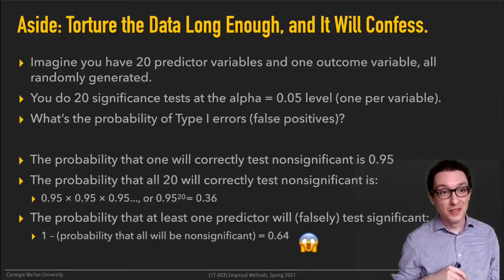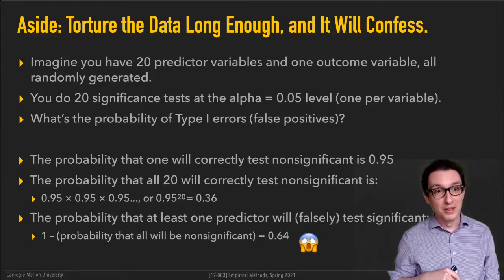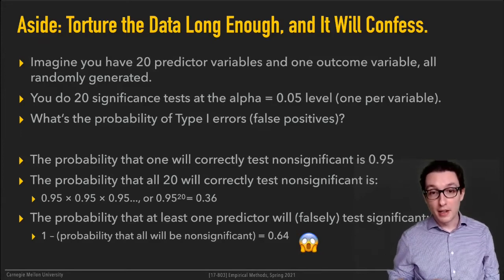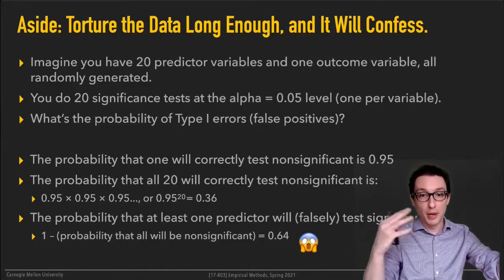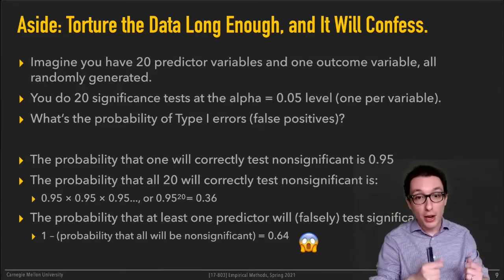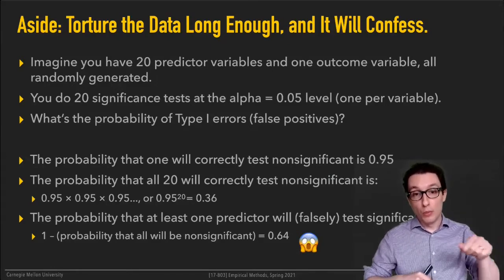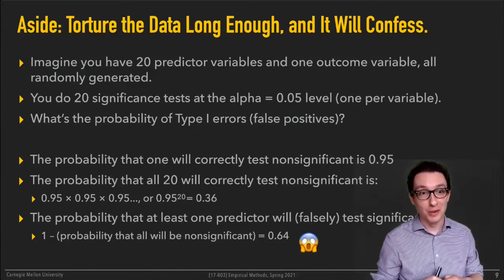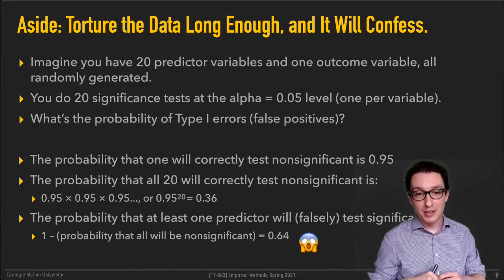That is much greater than the probability of getting your paper accepted at ICSI or CHI or wherever you submit papers to. This is why the headline is: if you torture the data long enough, it will confess to something. Basically if you interrogate the data long enough — interrogated 20 times — it's more likely than not that it will turn up something significant that you can report on in a paper.